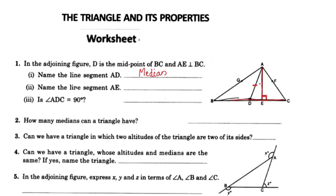Name the line segment AE. The vertex of the triangle connects to the opposite side perpendicularly. We call it perpendicular to BC — 90 degrees. Angle ADC is equal to 90 degrees, so it is the altitude.